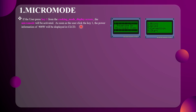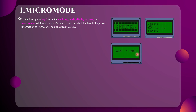After pressing key 1, the power information of 900 watts — the maximum power equal to 900 watts — will be displayed on the CLCD. First the powering-on screen appears, then the cooking mode display screen, where we select key 1 in the matrix keypad to activate the Micro mode and the power equal to 900 watts will be displayed.